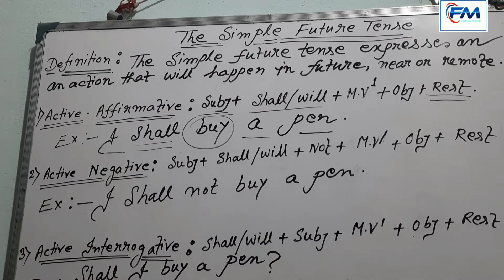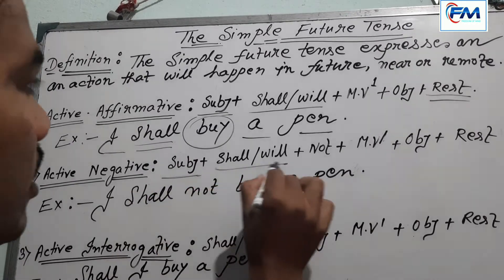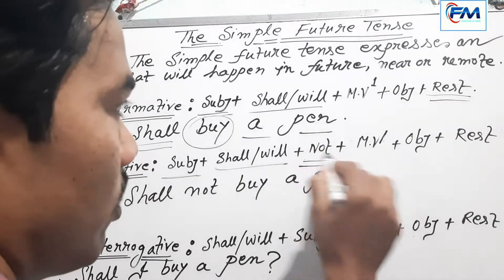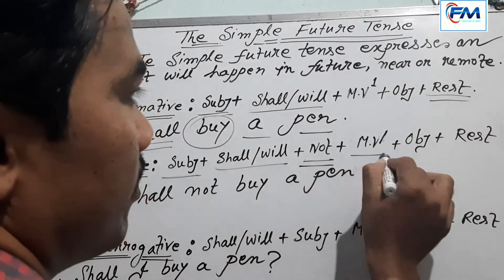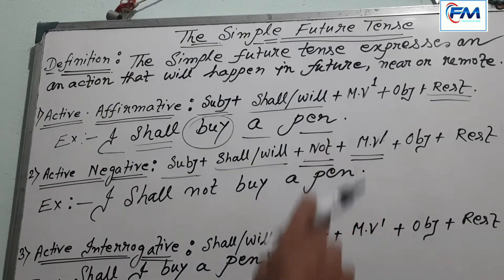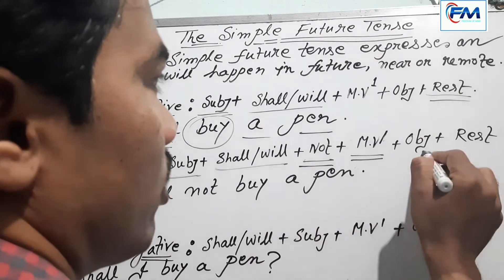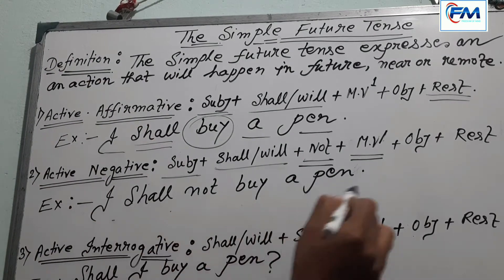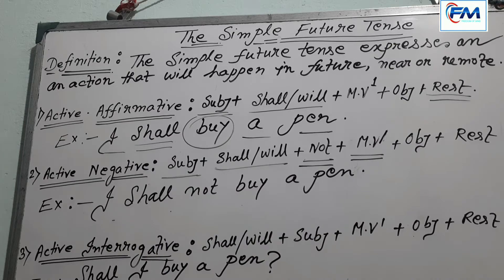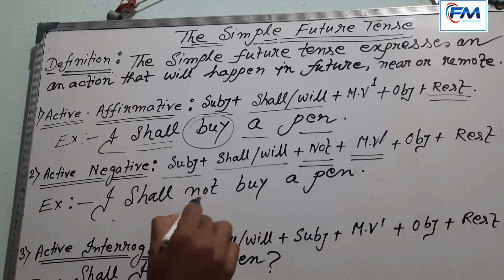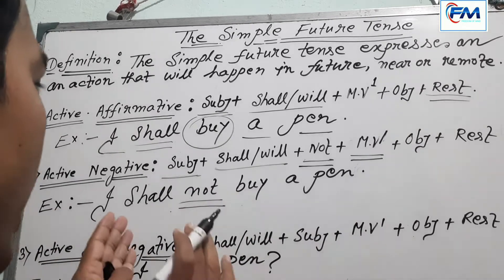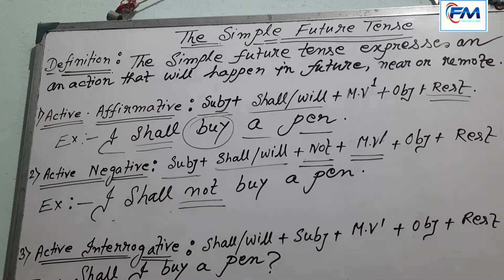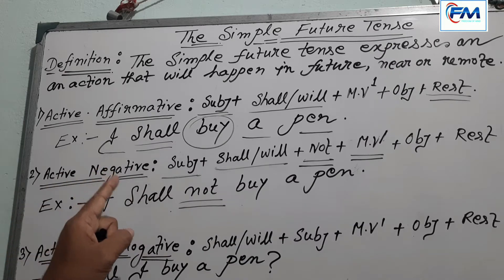Now I will discuss about the negative part of the simple future tense that belongs to the active part. The structure is: Subject + shall/will + not + main verb (present form) + object + rest. The example is: 'I shall not buy a pen.' This sentence is in negative form and belongs to the simple future tense.